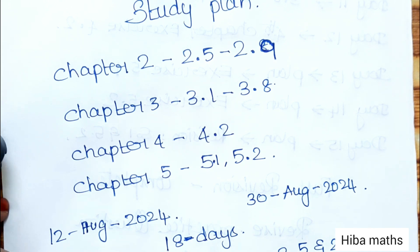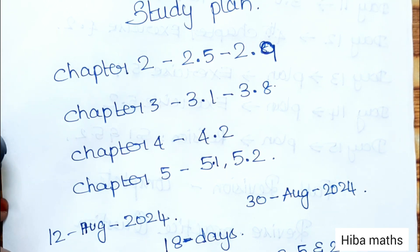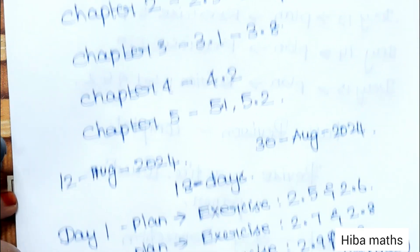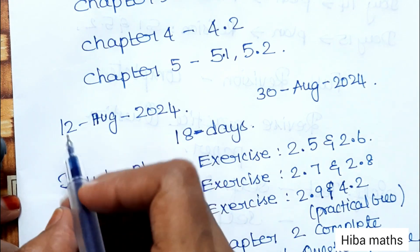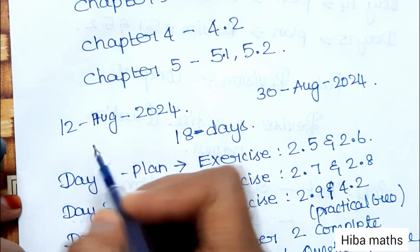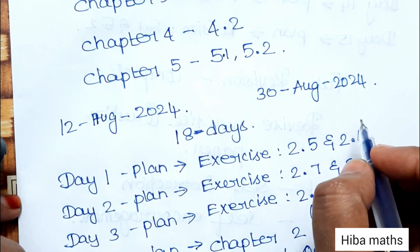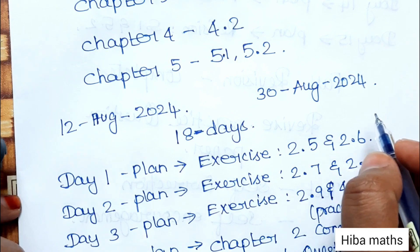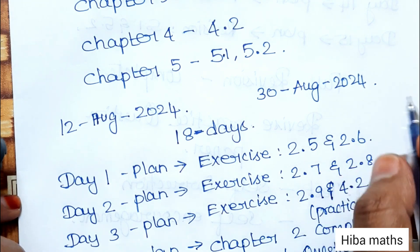If we are able to execute the plan, we can complete the portions at the correct time. We are starting from 12th August, and our maths exam is on 30th August.